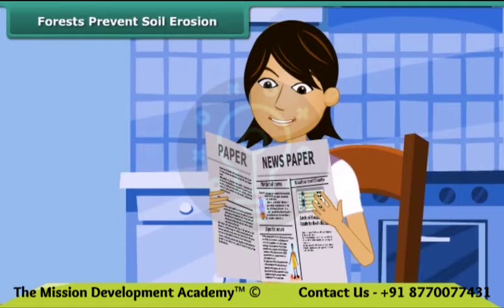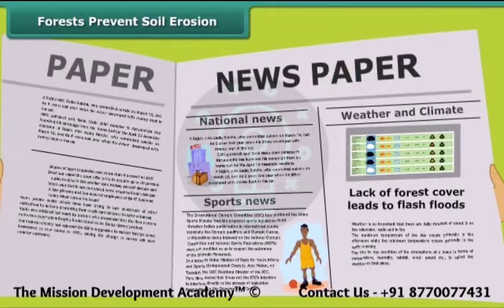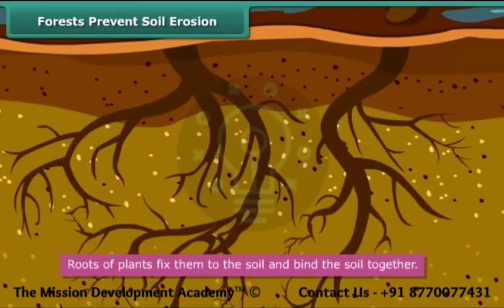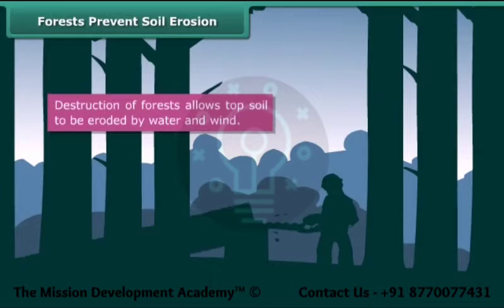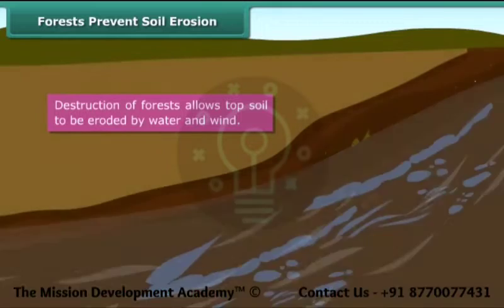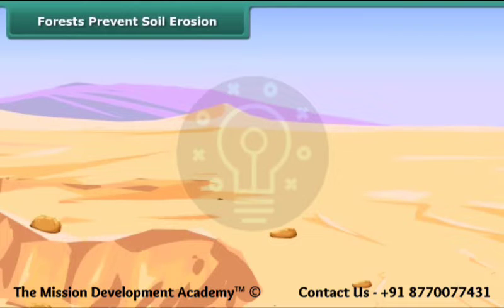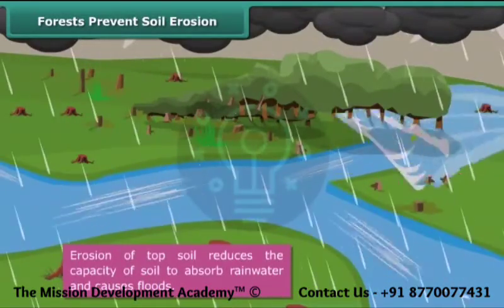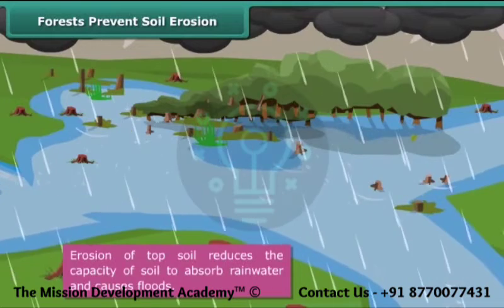Lina comes across a headline in the newspaper: 'Lack of forest cover leads to flash floods.' She is eager to know the connection between forests and floods. Roots of plants not only fix them to the soil but also bind the soil together. When forests are destroyed, the topsoil becomes loose and is eroded by water and wind. This causes an increase in desert land and reduces fertility of the soil. Erosion of topsoil also reduces the capacity of soil to absorb rainwater, resulting in floods.